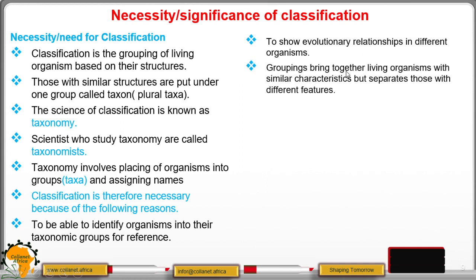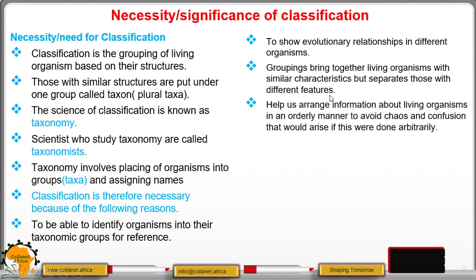Grouping brings together living organisms with similar characteristics. Classification also helps us arrange information about living organisms in an orderly manner, to avoid the chaos and confusion that would arise if this were done arbitrarily.